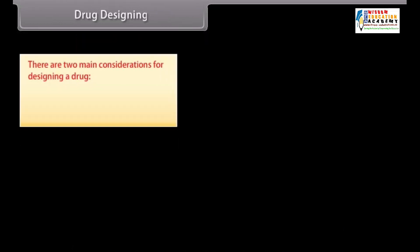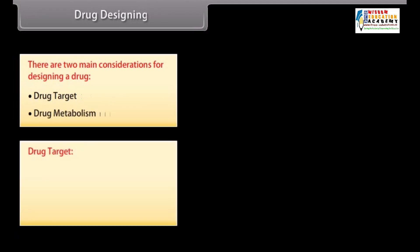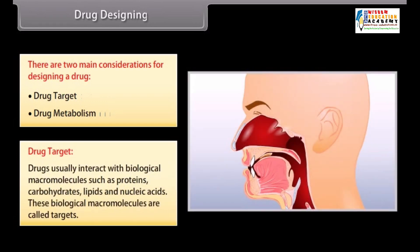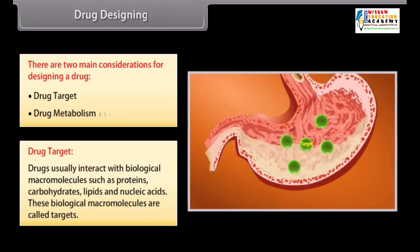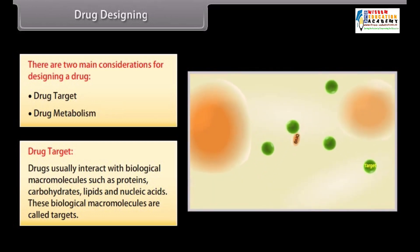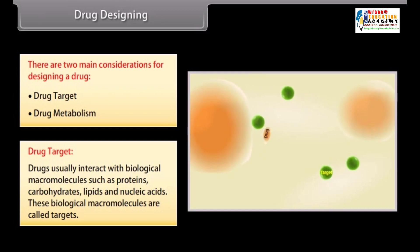There are two main considerations for designing a drug: drug target and drug metabolism. Drug target: drugs usually interact with biological macromolecules such as proteins, carbohydrates, lipids, and nucleic acids. These biological macromolecules are called targets. The correct choice of drug target is important to obtain good therapeutic effects of a drug.